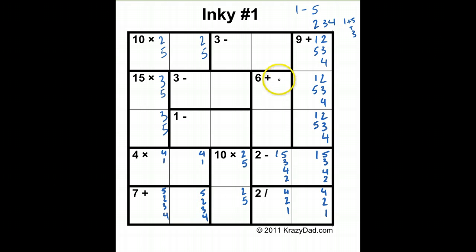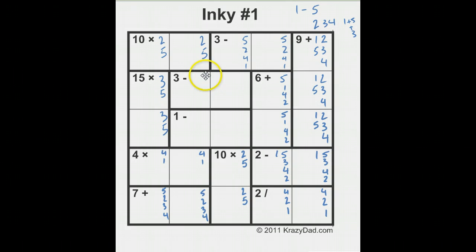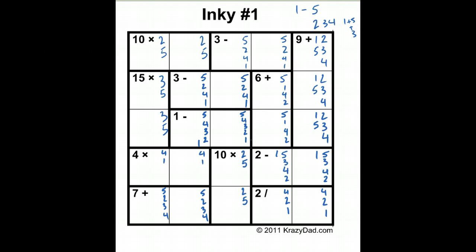For the six-plus cage I can do five and one, four and two — three and three won't work. The three-minus cage: five minus two or four minus one are my only options. Same options apply to the other three-minus cage — five, two, four, one. For the one-minus cage, I can go five minus four, four minus three, three minus two, or two minus one, so all numbers work: five, four, three, two, one.